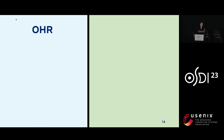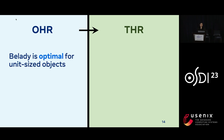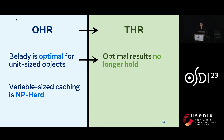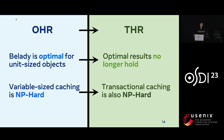To summarize so far, we've motivated the need to move from object hit rate to transactional hit rate, and using this metric has several significant implications. First, optimality results for object hit rate no longer hold — Belady is the offline optimal policy for uniformly sized objects, but it's no longer optimal for transactional hit rate, even if all objects are the same size in transactions. Furthermore, variable size caching is known to be NP-hard, and we prove that transactional caching is also NP-hard, meaning we need to use heuristics to efficiently figure out what to keep in cache at runtime.